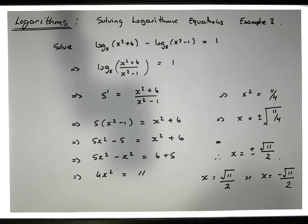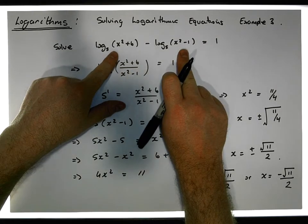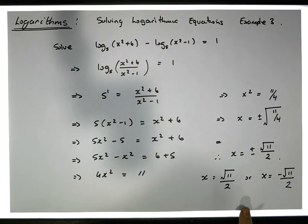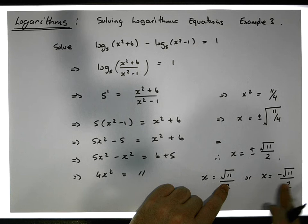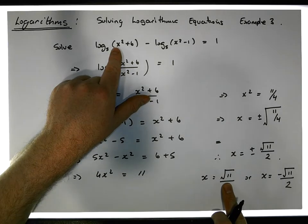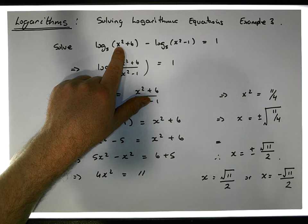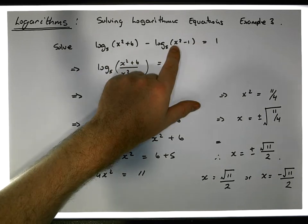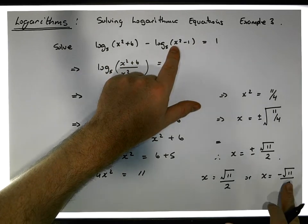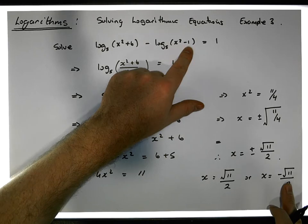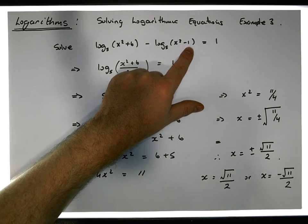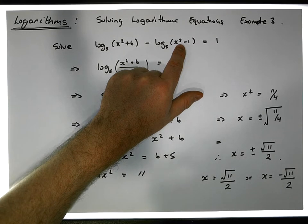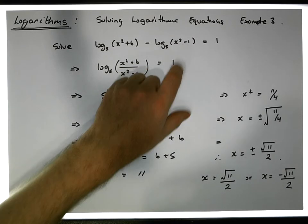Now let's be careful — these are solutions to this logarithmic equation, and we have both positive and negative values. For the positive value, x squared is going to be positive, plus 6 is still positive. And x squared minus 1: since 11 over 4 is greater than 1, x squared minus 1 is still going to be greater than zero, so we're okay in that instance.